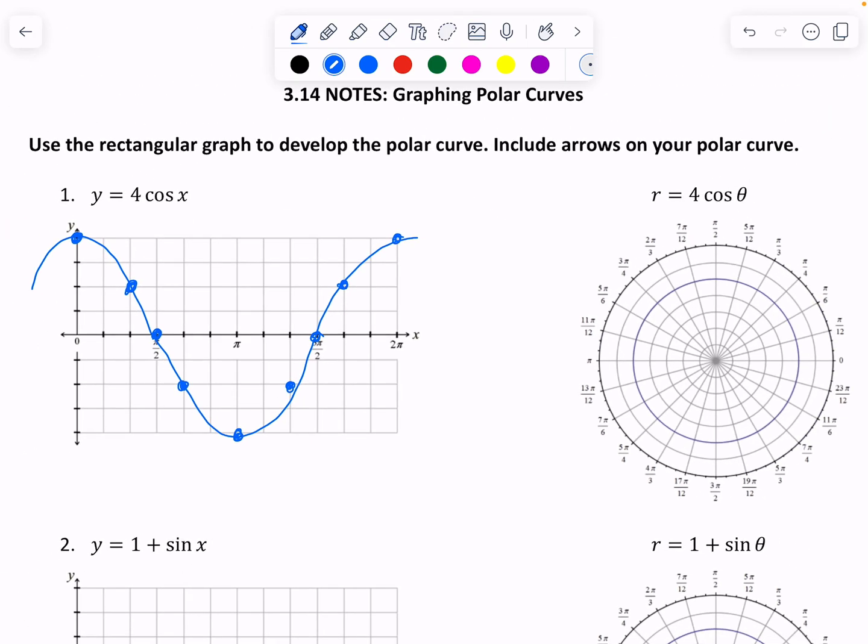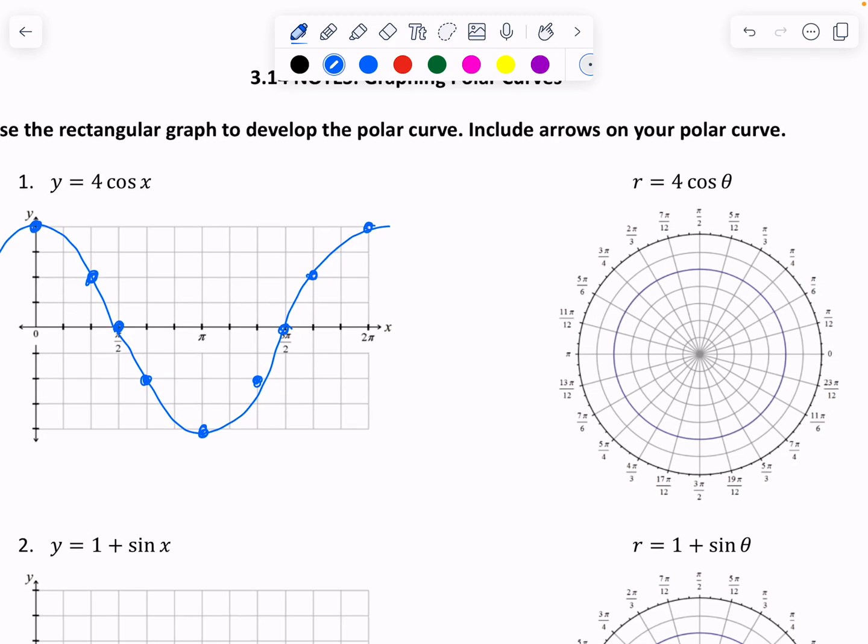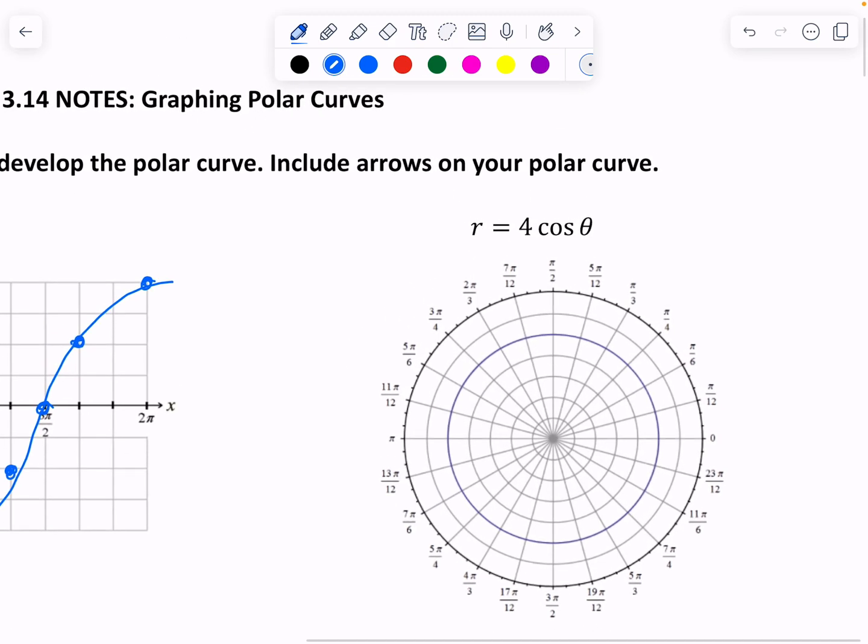So what we need to do is now we're graphing. And I've seen AP Precal write it like this, they'll say r. How do they do it? They say r equals f of theta, which equals four cosine theta. Or they may say the other way around, where they may say f of theta equals r, which equals whatever. Basically what's happening here is the radius is equal to this function in terms of theta.